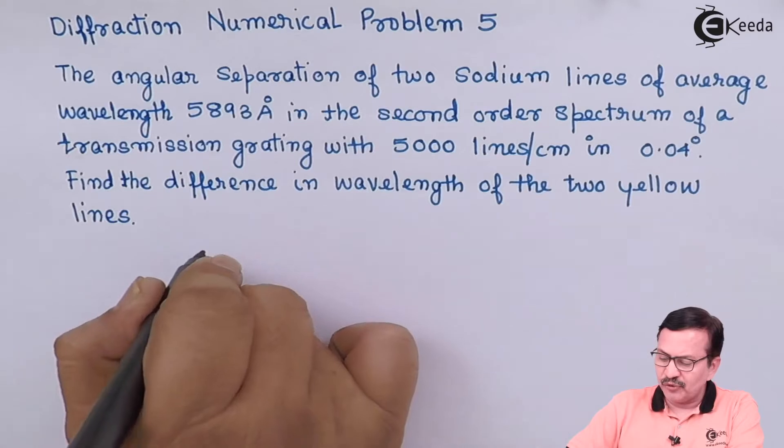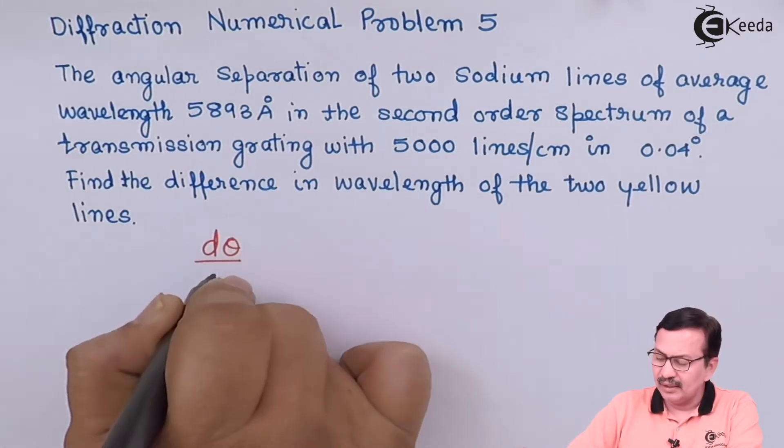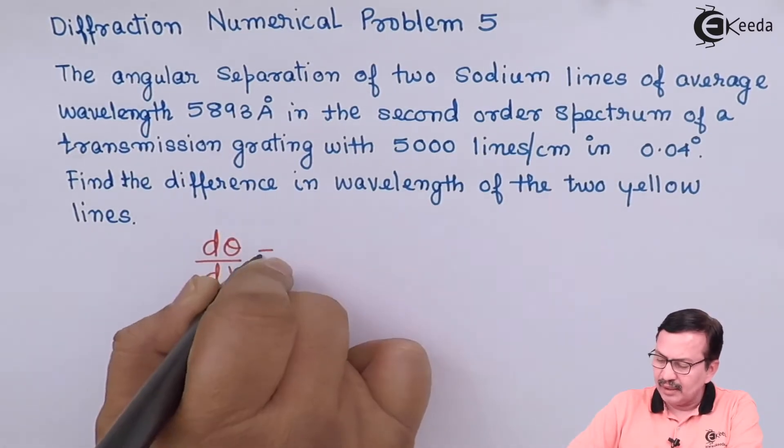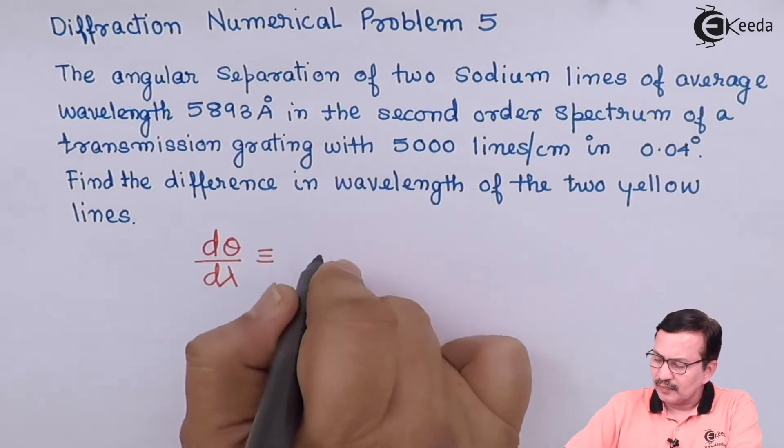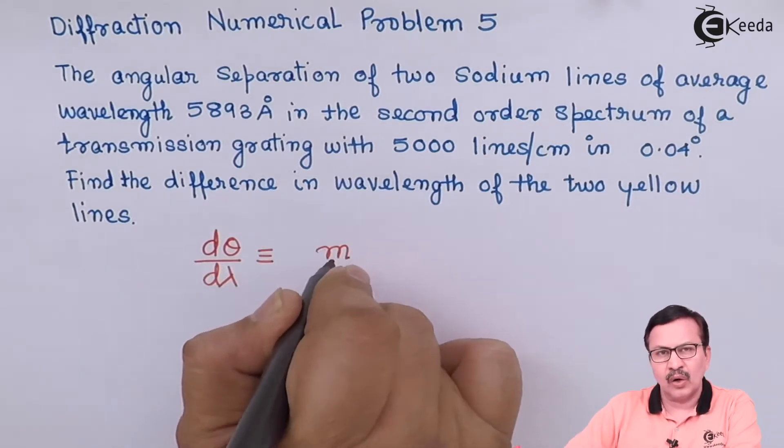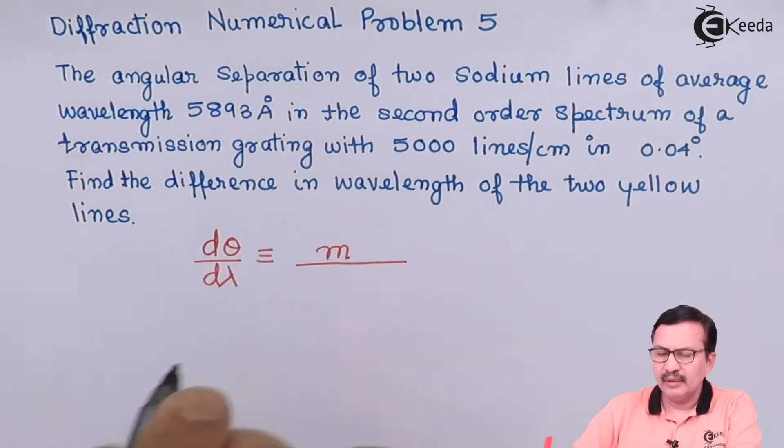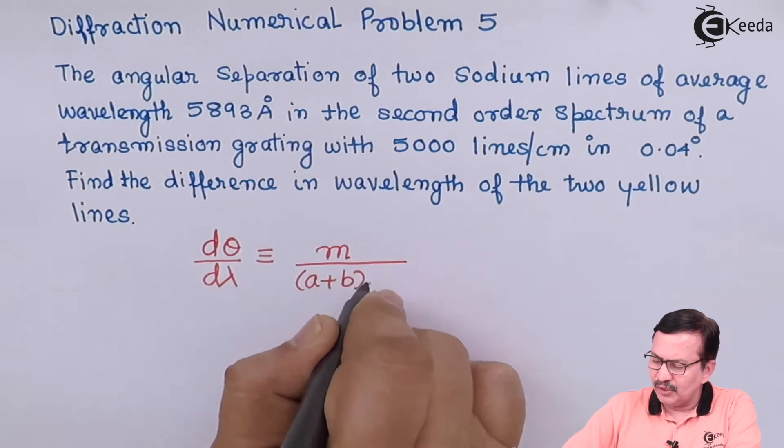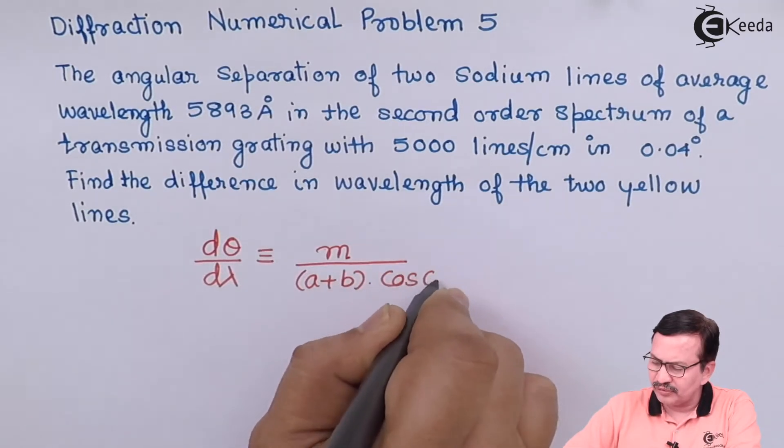So the equation for the dispersive power of a grating is dθ/dλ equals m, which is the order, divided by (a+b) times cos θ.